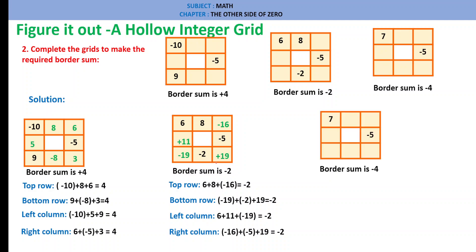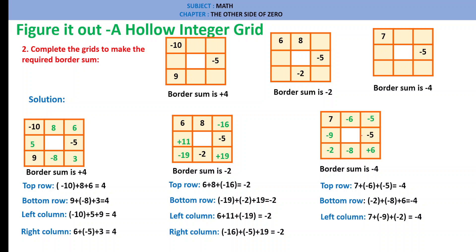Third grid has a border sum of minus 4. Top row: 7, minus 6, minus 5 — sum is minus 4. Bottom row: minus 2, minus 8, plus 6 = minus 4. Left column: 7, minus 9, minus 2 = minus 4. Right column: minus 5, minus 5, plus 6 = minus 4.